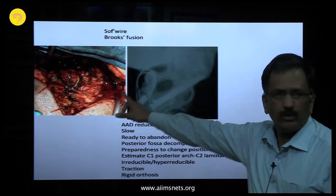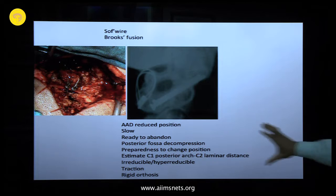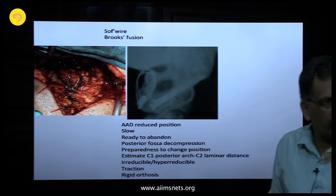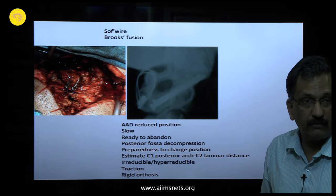One important point: when doing this fusion, the atlantoaxial dislocation must be in reduced position. How do you confirm reduction? Using a C-arm is difficult. When passing sublaminar wires, if there is not adequate space, the joint is in dislocated position. Go very slowly — do not manipulate. Adequate space confirms reduction.